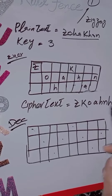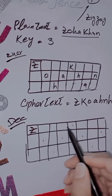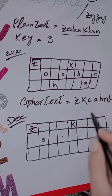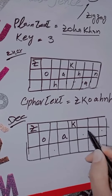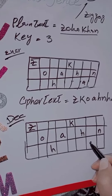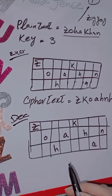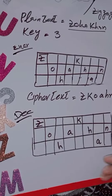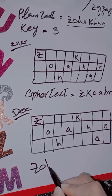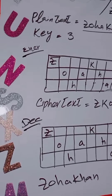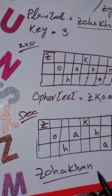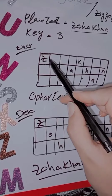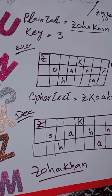How do we write Z, K, Z? When we work with Z as a dot, we will write K and A. When we decrypt, we write it like Z — Z-O-H-A-K-H-A-N — and we have the plain text again.